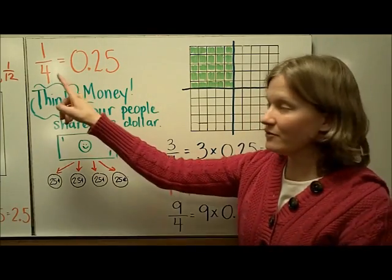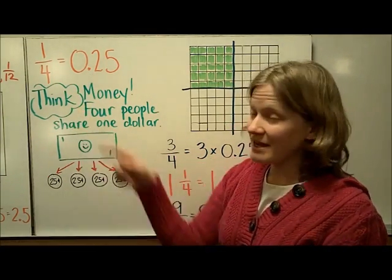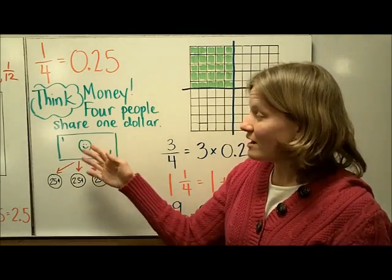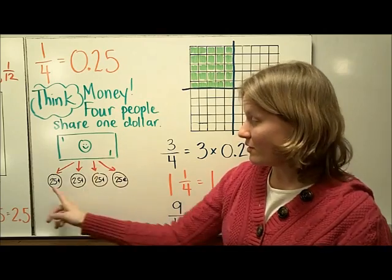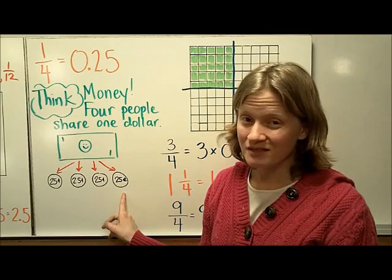The next one to think about is the 1 fourth fraction, which is equal to 25 hundredths. Again, let's think about money. Think about 1 dollar split among 4 people. And if we take a dollar and split it into 4 people, each person is going to get 25 cents, or 25 hundredths.